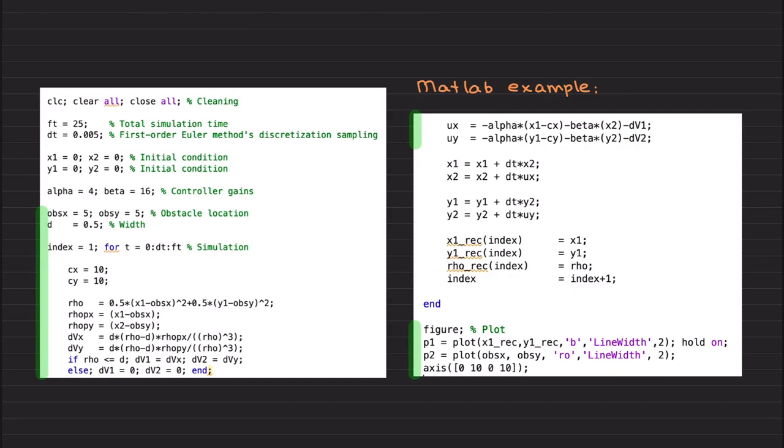This is how you represent X dot dot equals to UX in state space form and Y dot dot equals to UY in state space form. X1 is basically X. X2 is X dot such that you can get this. If you have any difficulty about representing the system in the state space form, leave a comment. I can direct you to the most relevant video on my channel so that you can capture the full picture.